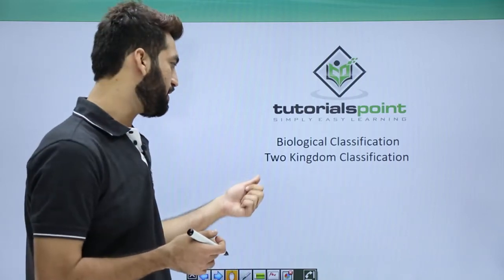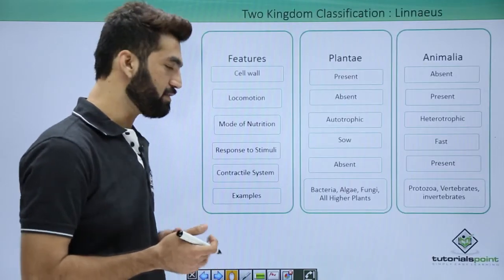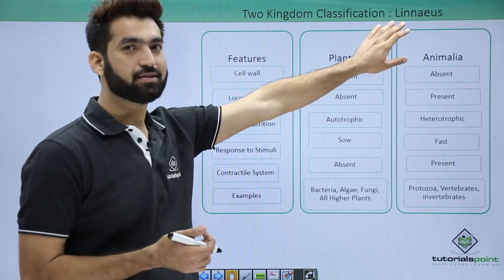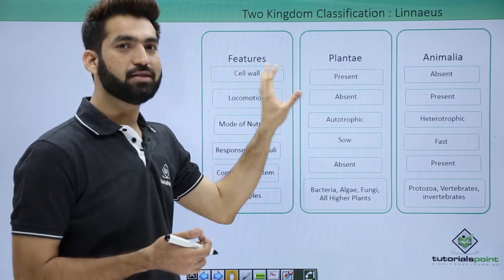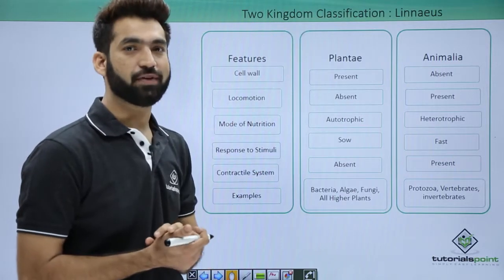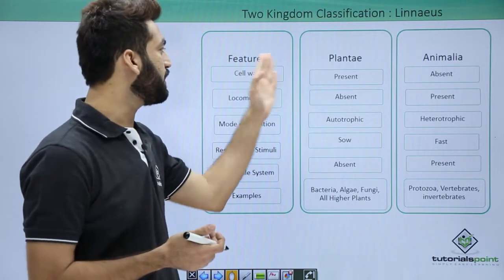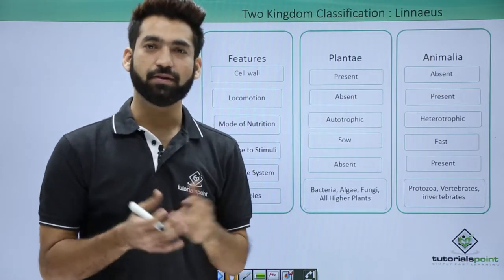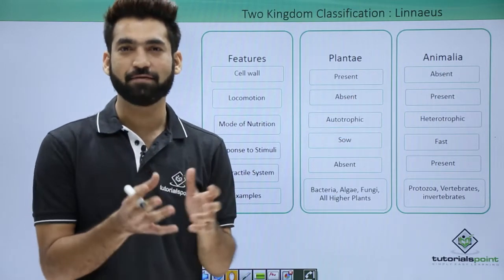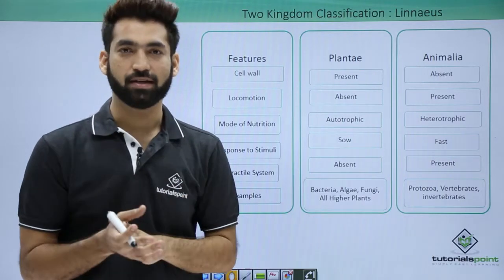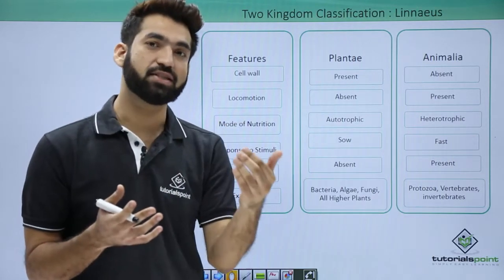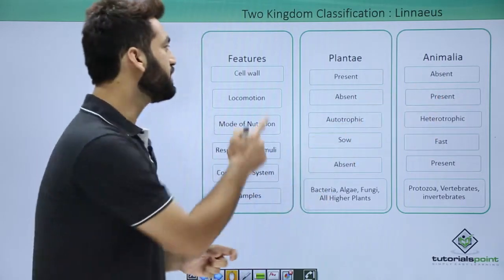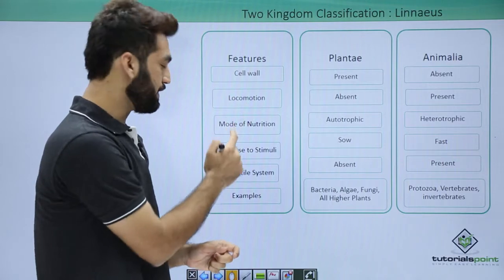In this session we'll be talking about the two kingdom classification system. Linnaeus classified organisms into two kingdoms: Kingdom Plantae and Kingdom Animalia. Aristotle also classified living organisms into plants and animals, but he could not mention the significant differences between plants and animals, which Linnaeus provided.